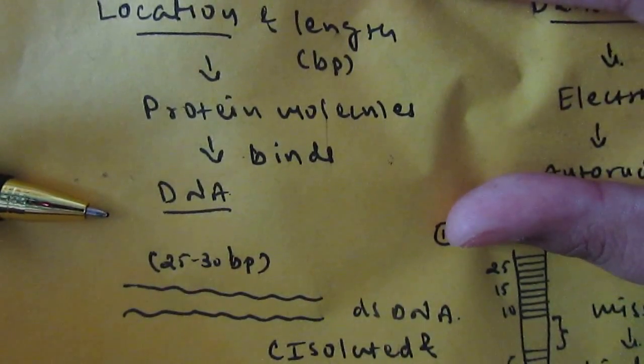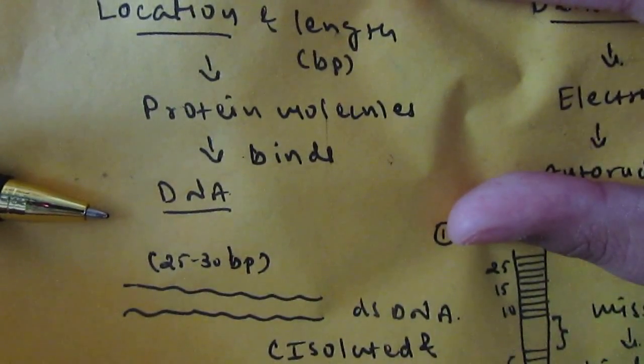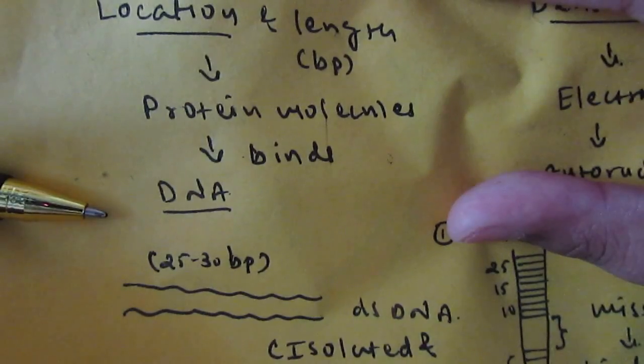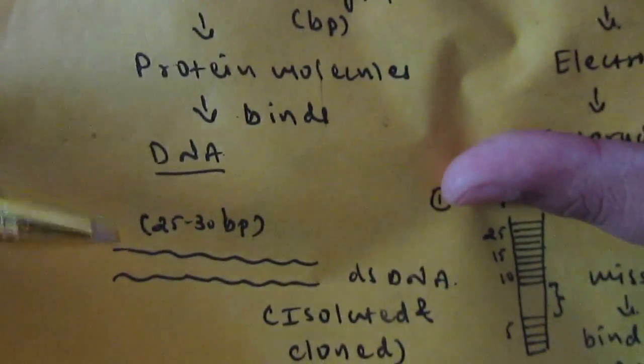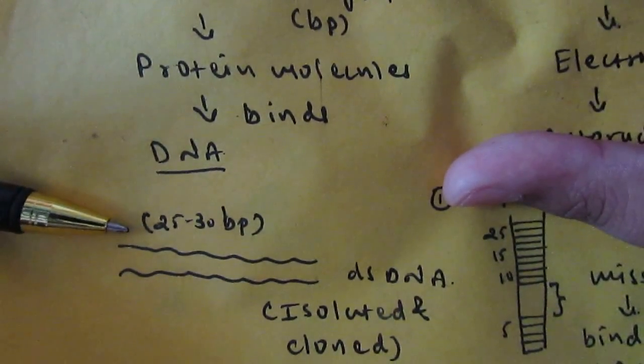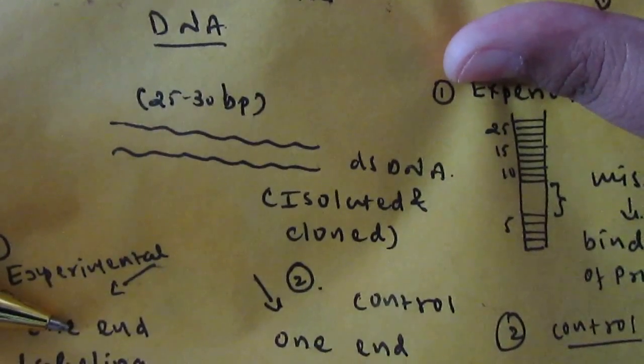and then cloned with a particular vector system. Two samples are prepared. For example, if the length of the DNA molecule is 25 to 30 base pairs, one acts as an experimental sample